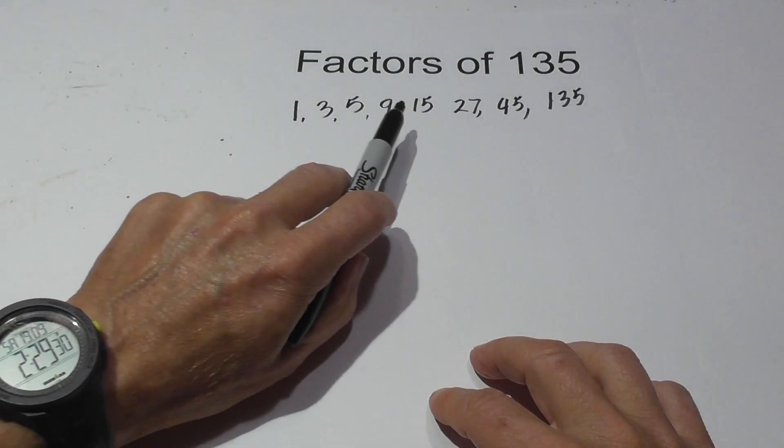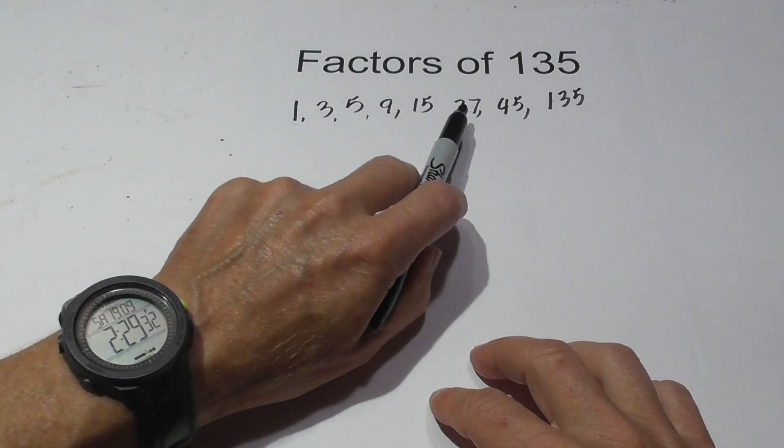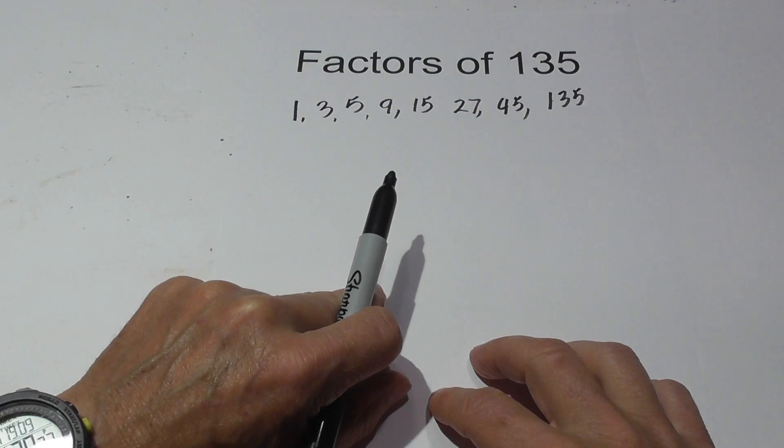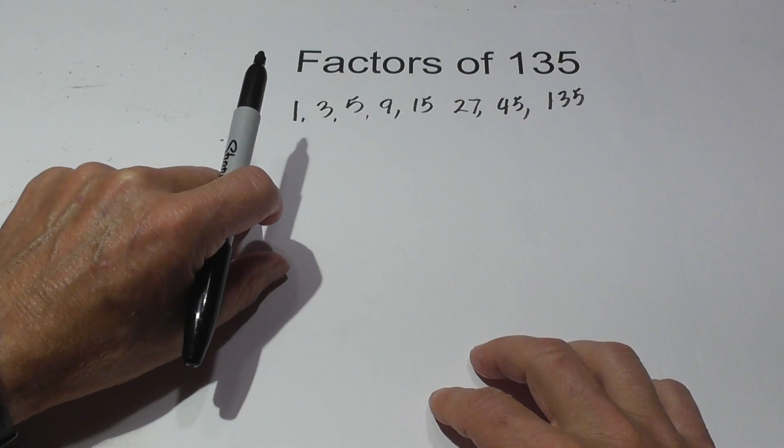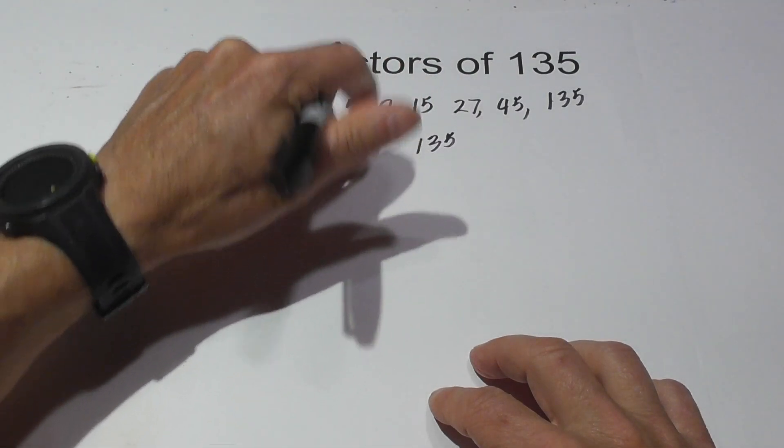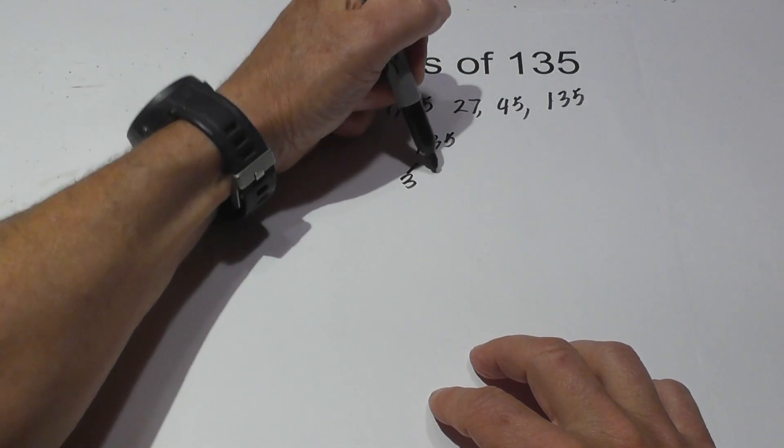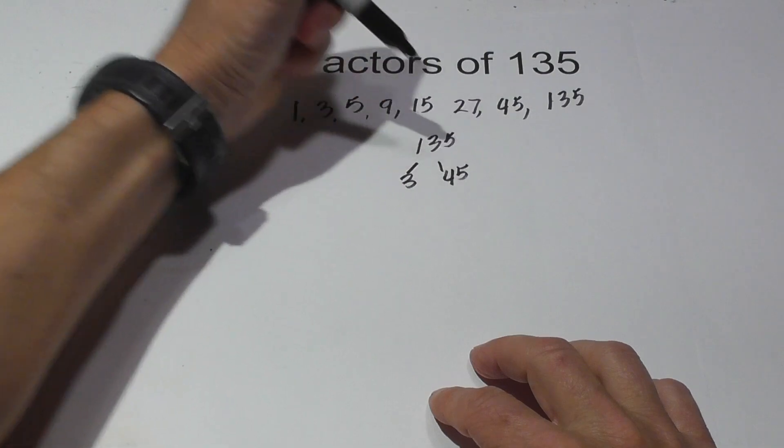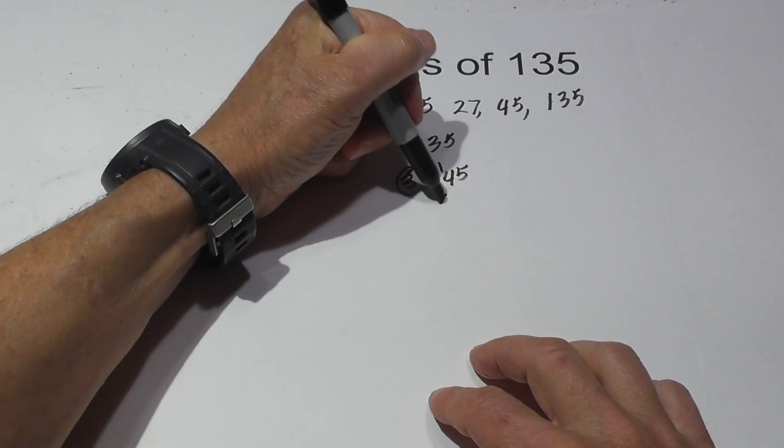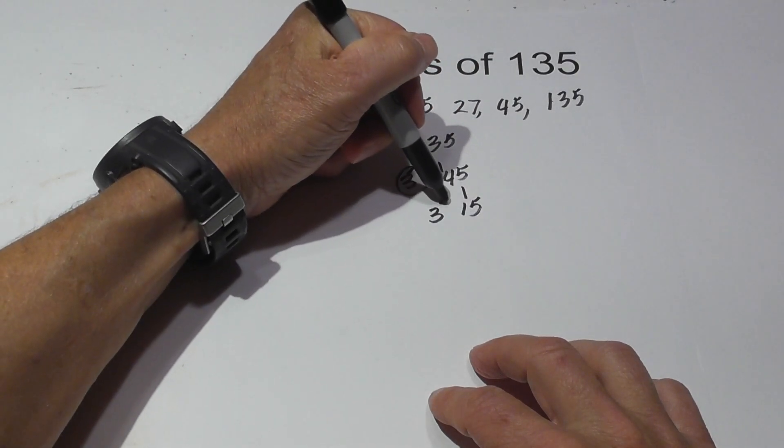So the factors of 135 are 1, 3, 5, 9, 15, 27, 45, and 135. Next, let's complete a factor tree for 135. I will begin with 135 and 3 times 45 equals 135. I'll circle the 3 because it is prime.